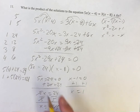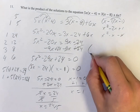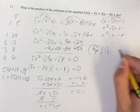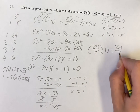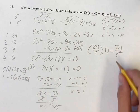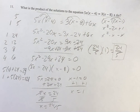Now we're asked for the product of the solutions, so we multiply them: 24 over 5 times 1 equals 24 over 5. Multiplying by 1 keeps it the same, so 24 over 5 is our final answer. As always, thank you for liking and subscribing, and I'll see you in the next video.